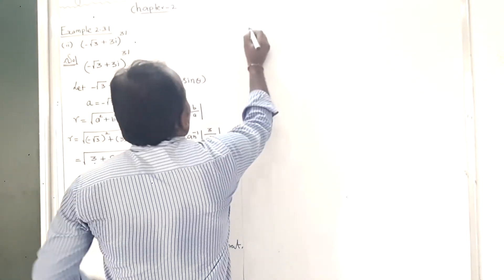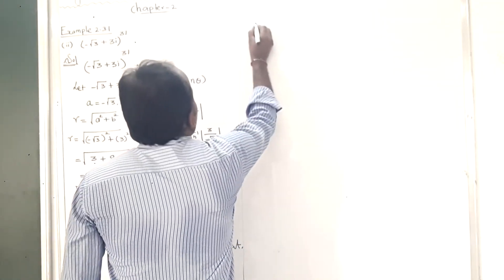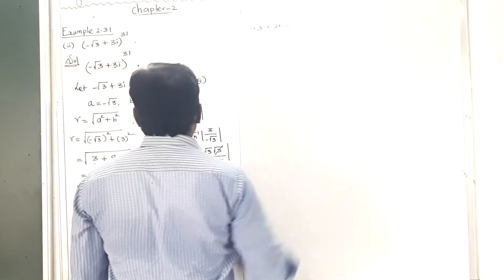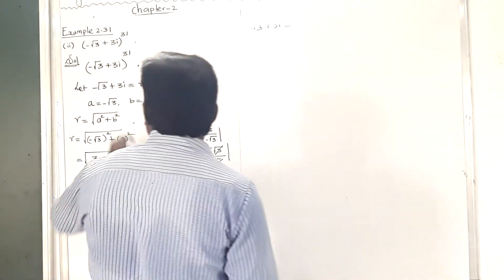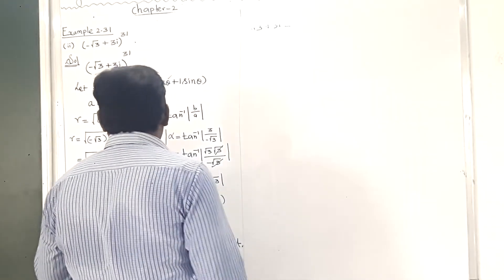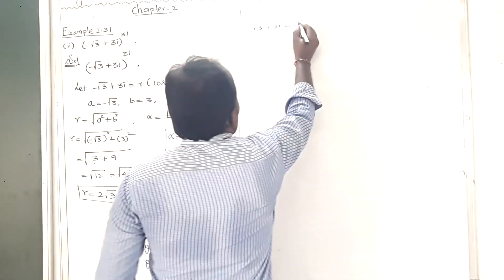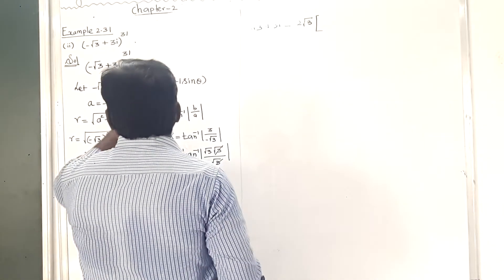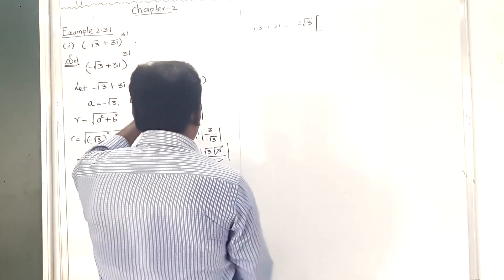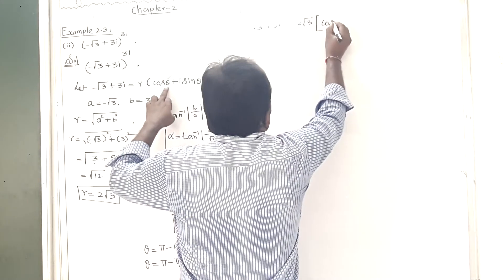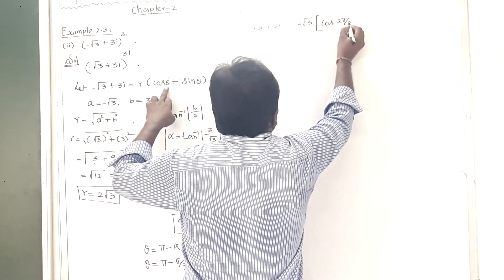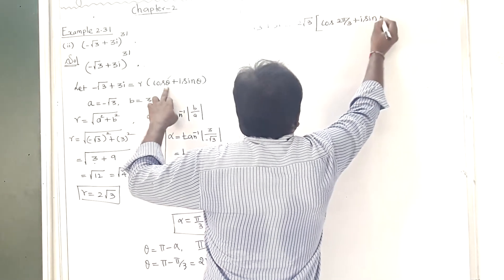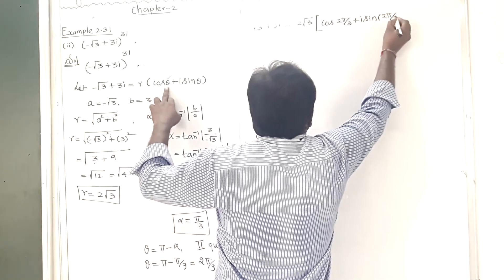So the complex number (-√3 + 3i) = r(cos θ + i sin θ). Replacing r with 2√3 and theta with 2π/3: (-√3 + 3i) = 2√3 · (cos(2π/3) + i sin(2π/3)).